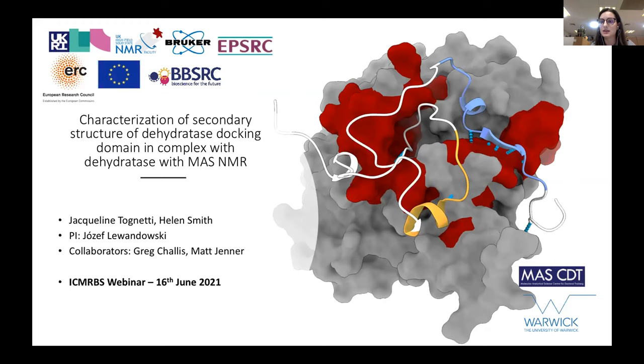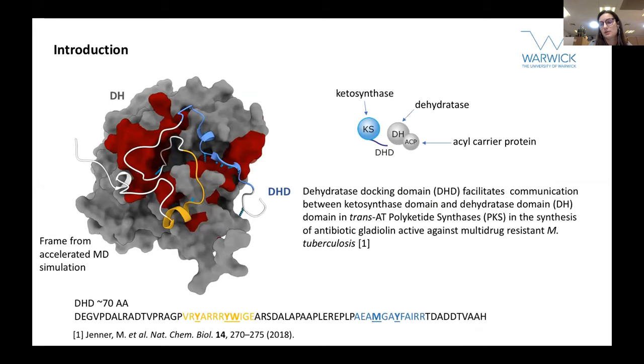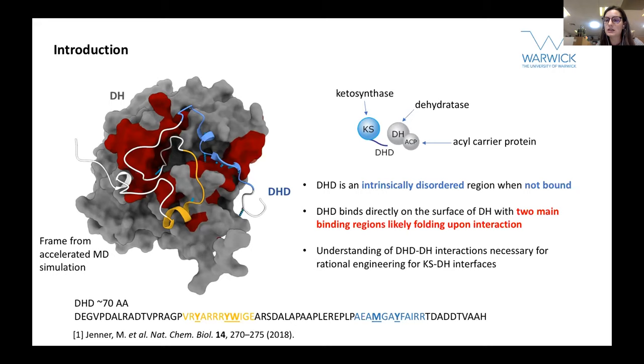First, I'd like to start with a small biological introduction on what the DH-type domain is and why it's important. The DH-type docking domain, which I'll call DHD for simplicity, facilitates communication between the ketosynthase and the dehydratase in the multi-enzyme synthase involved in production of the antibiotic geldanamycin, which is active against mycobacterium tuberculosis. The DHD is an intrinsically disordered domain when unbound, but we think it could fold upon directly binding the surface of the DH.